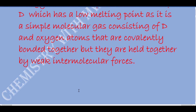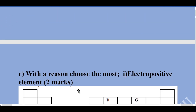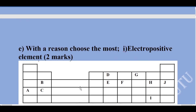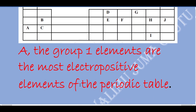With a reason, choose the most electropositive element. The most electropositive elements are those in group 1. That is A. Group 1 elements are the most electropositive elements of the periodic table.